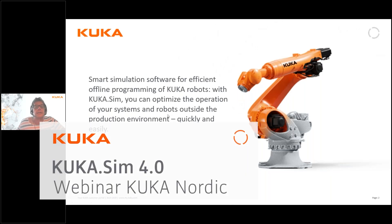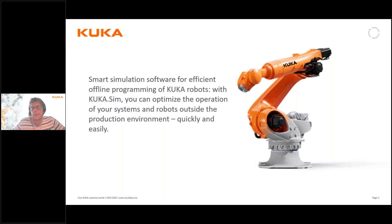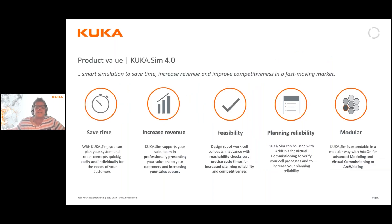KUKA.Sim is basically a simulation software which supports offline programming for our robots and a tool where we can optimize your process or operations and test your robot operations outside of the production environment in a virtual environment. Its focus is ease of use and fast use, so to be as efficient as possible. This really is a tool for saving time and increasing revenue.